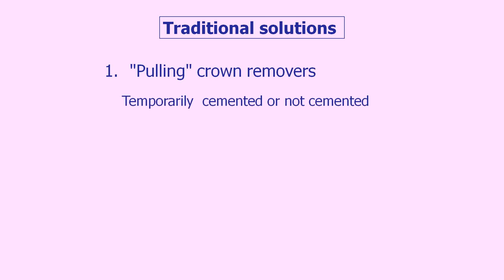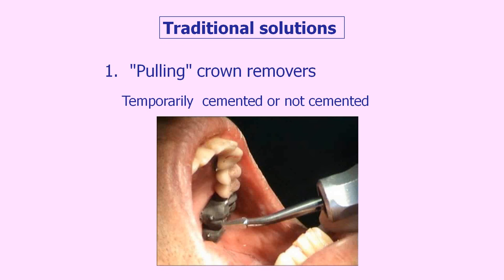I strongly recommend avoiding these pulling systems — except perhaps when dealing with non-cemented crowns, such as when you're trying a new crown or removing temporarily cemented crowns. One helpful tip: when you make new crowns, I strongly recommend adding small undercuts on the lingual side of your crowns, which makes removal much easier when you try the crown. It's something I very strongly recommend — it can be very helpful.